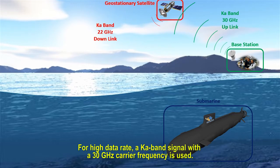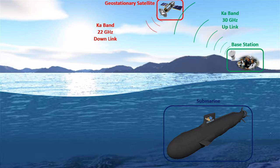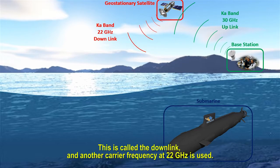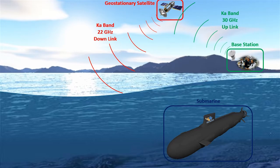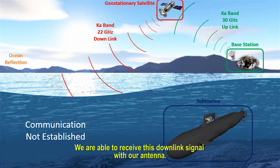For a high data rate, a Ka band signal with a 30 GHz carrier frequency is used. The satellite retransmits the information towards the ground. This is called the downlink, and another carrier frequency at 22 GHz is used. We are able to receive this downlink signal with our antenna.